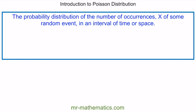In this video, I'm going to give you an introduction to a Poisson distribution. A Poisson distribution is defined as the probability distribution of a number of occurrences, which we call x, of some random event in a given interval of time or space.